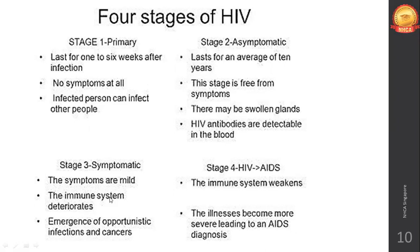Stage 4 is AIDS — immunity is completely gone. All opportunistic infections acquired in Stage 3 become severe and chronic. This is when the patient is clinically diagnosed as having AIDS. The patient survives only a few months after reaching this stage.